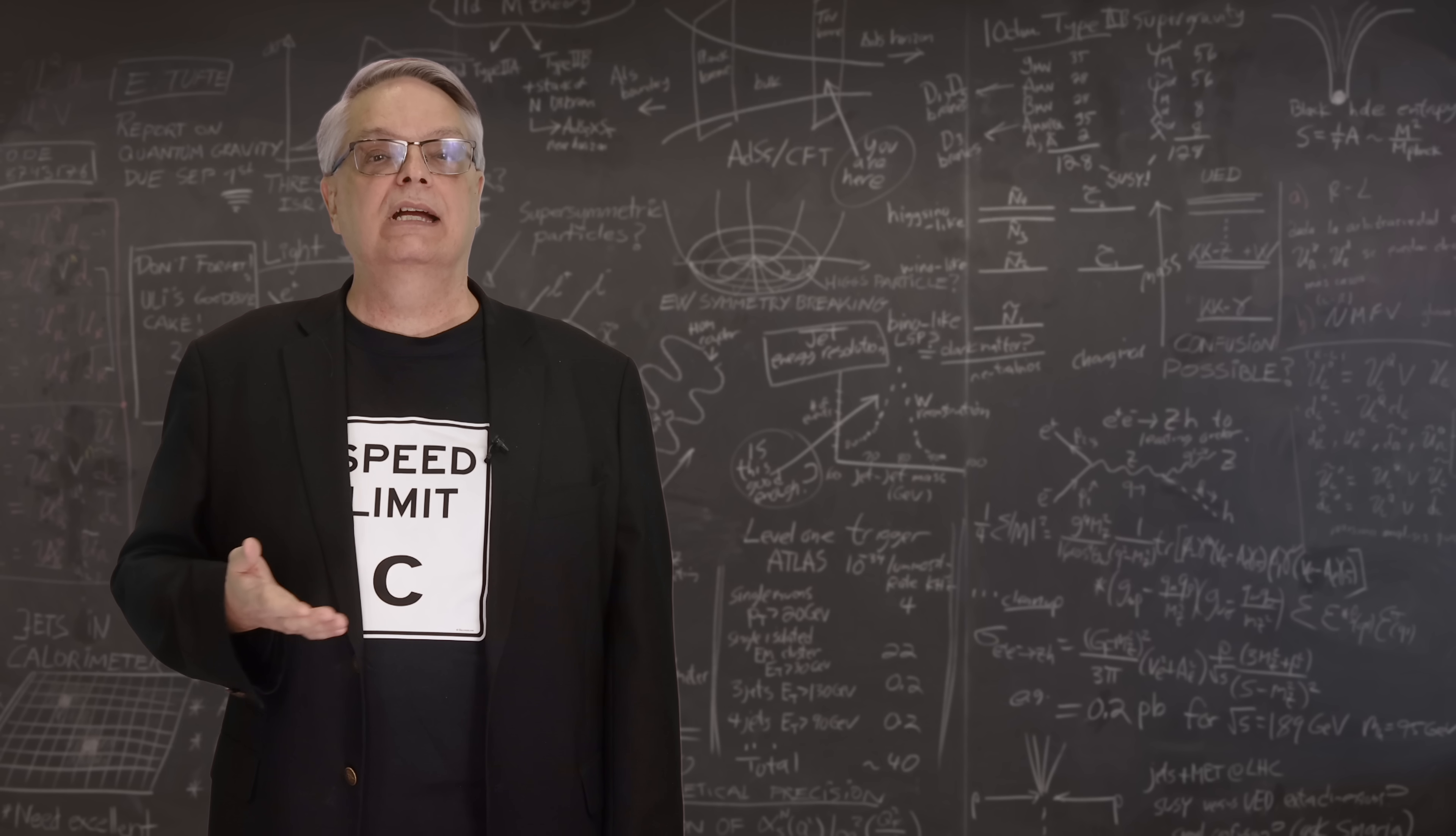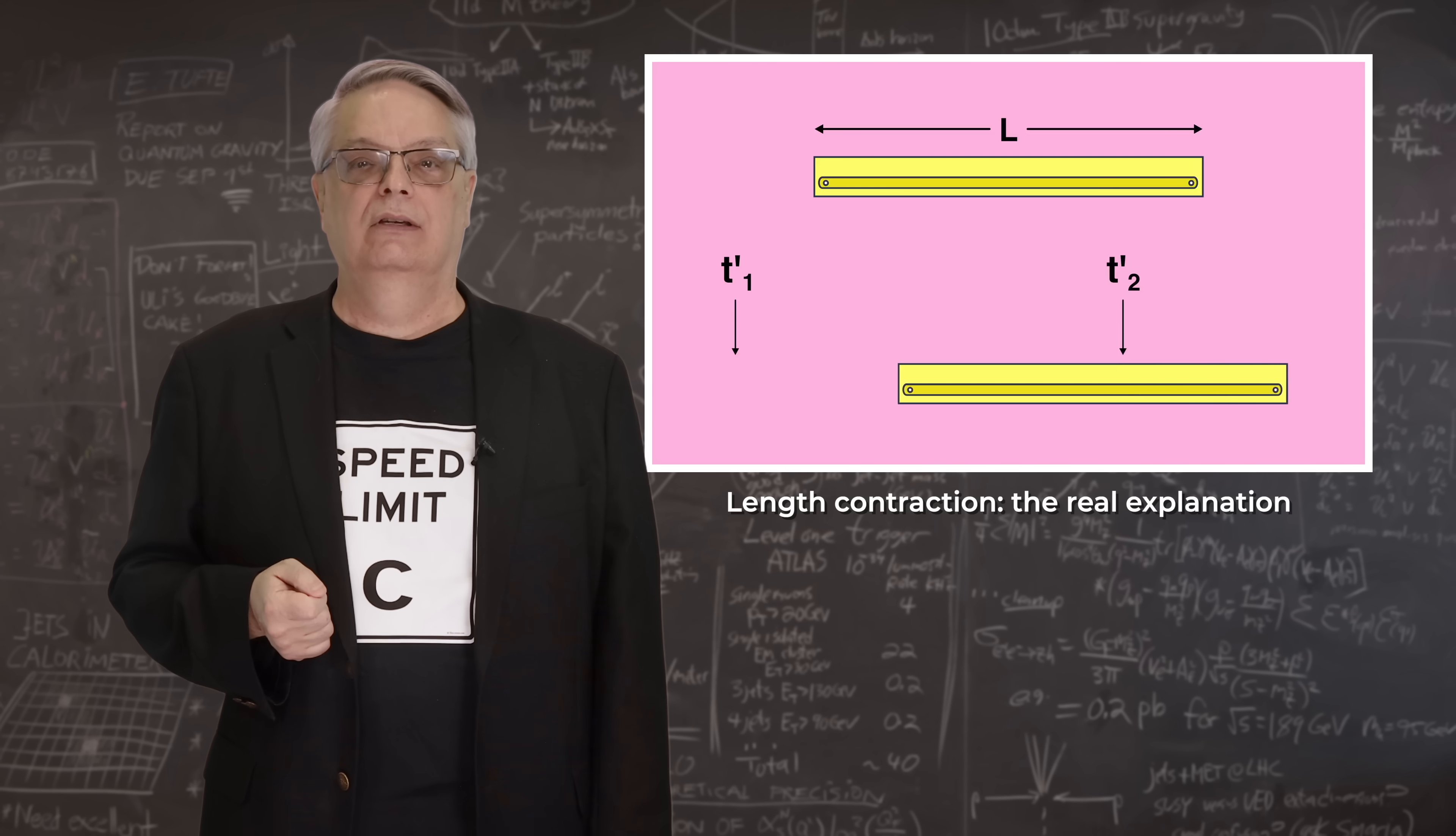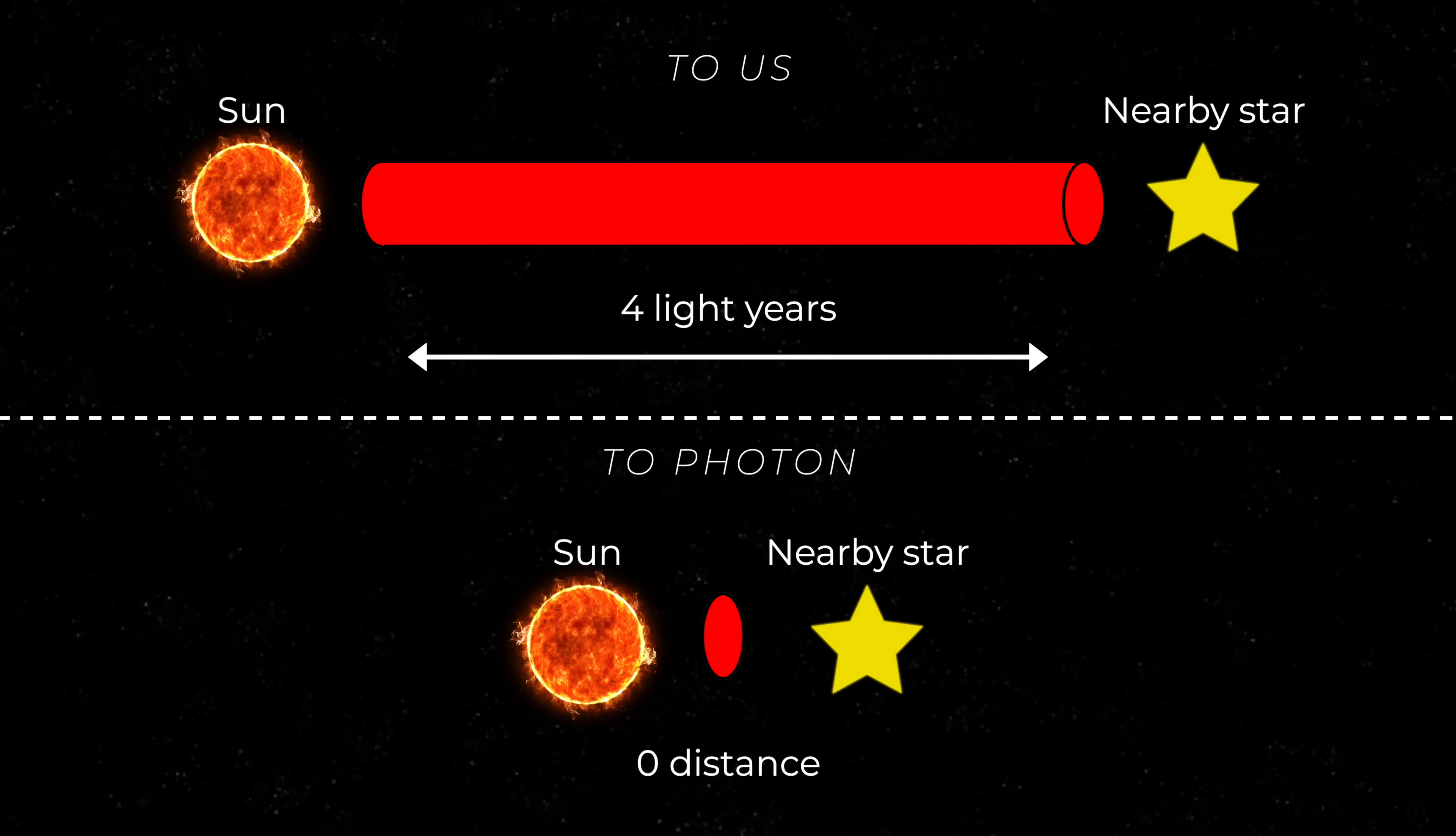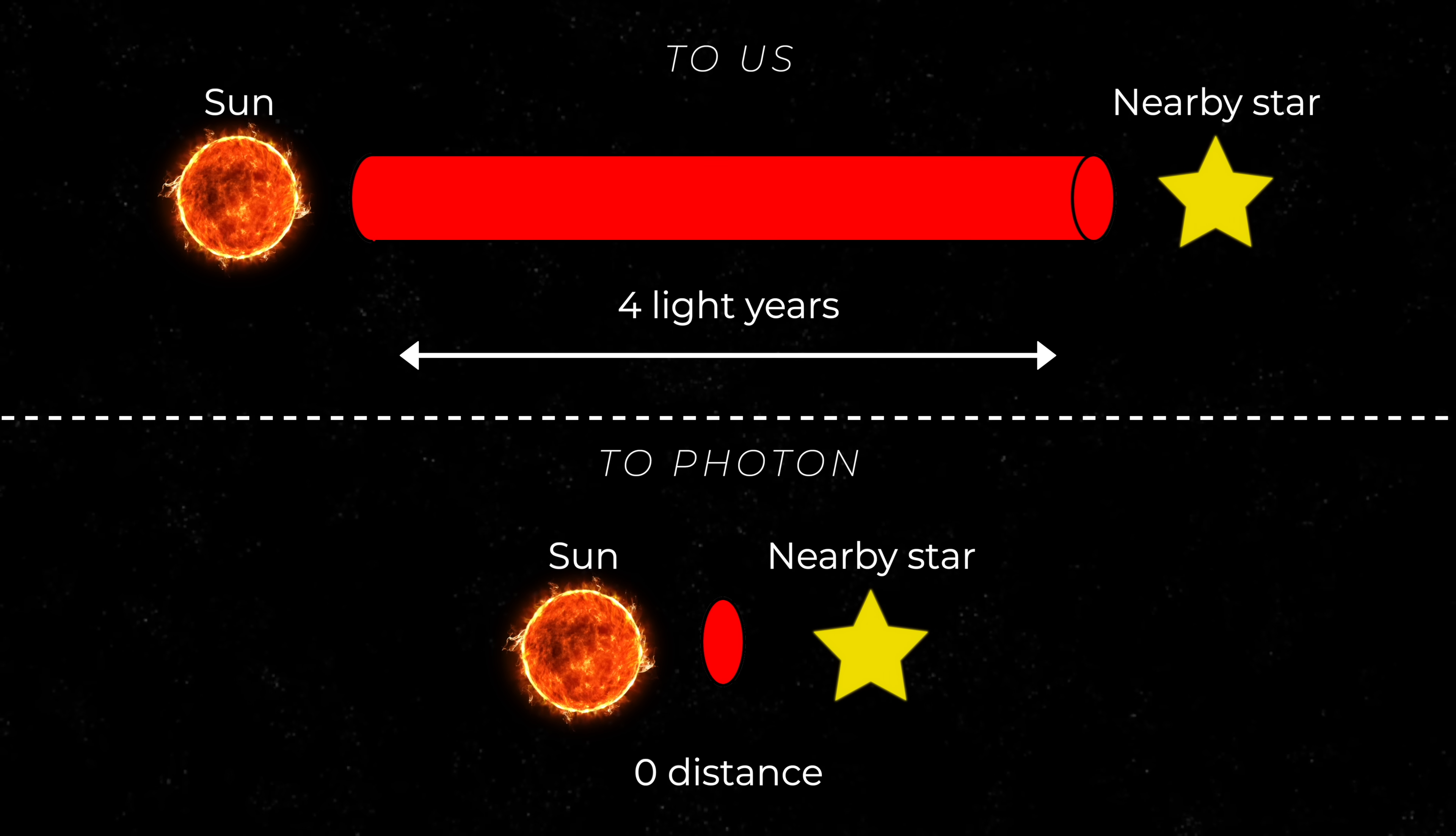Not only does relativity predict that times will shrink, but it also predicts distances will too. Indeed, I made an entire video on this subject, which is called length contraction. And as usual, the link is in the description. A fast-moving object will shrink distances in the direction of motion, although not side to side. If we made a cylinder that stretched from here to the next star, we'd see it as 4 light-years long, while the photon would see it as a circle with no thickness.